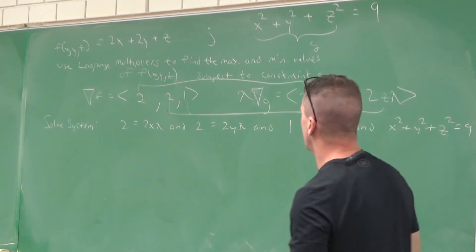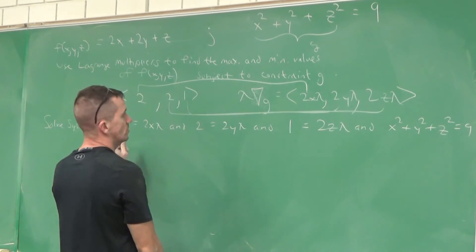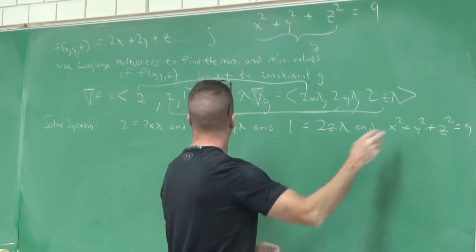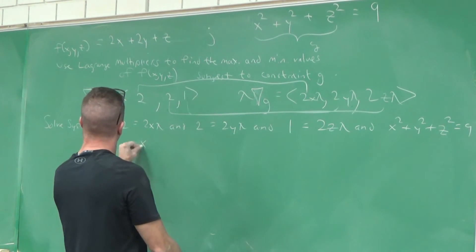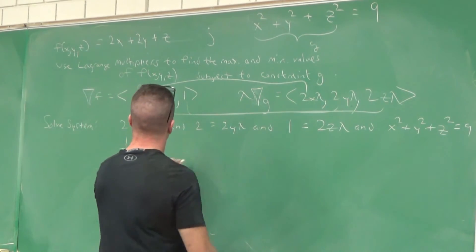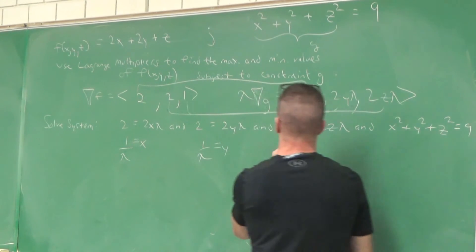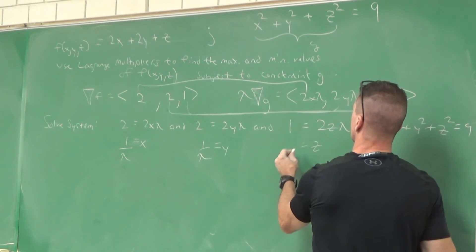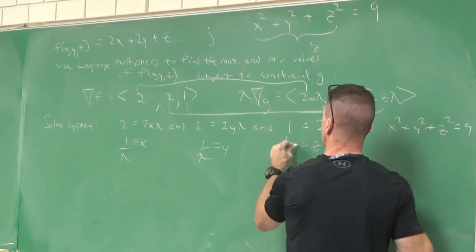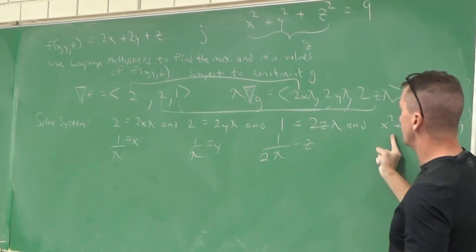Let's solve for x, y, and z in terms of lambda. Dividing through, x equals one over lambda. Similarly y equals one over lambda. And z — dividing two by 2 lambda — gives z equals one over two lambda.